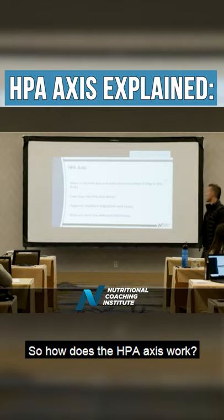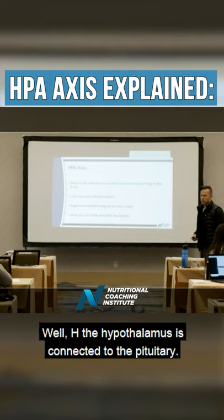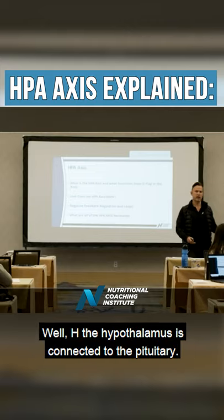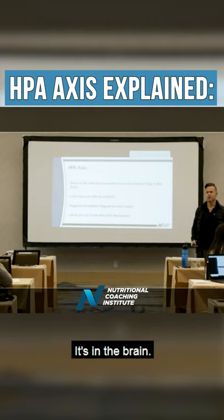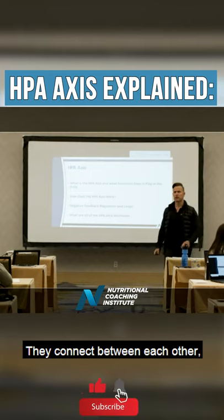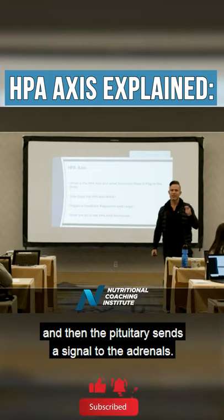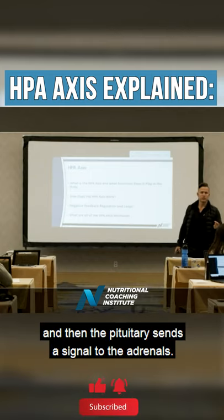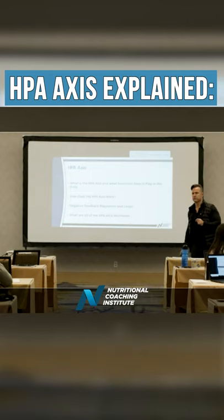So how does the HPA axis work? The hypothalamus is connected to the pituitary — it's in the brain. It sends a signal; they connect between each other. And then the pituitary sends a signal to the adrenals.